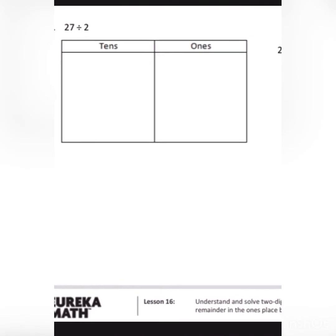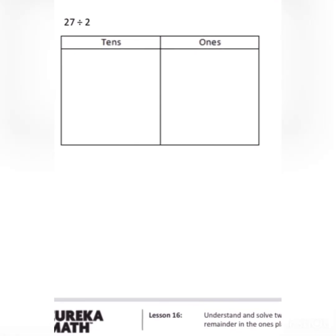Here's our next example. So problem number 2 is 27 divided by 2. As you can see they already gave us our place value chart with our tens and our ones column labeled. The first thing I'm going to do is draw my ones. So in the number 27 I know that there are 7 ones. So I'm going to draw 7 discs.